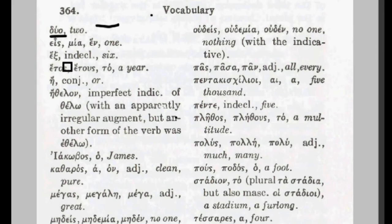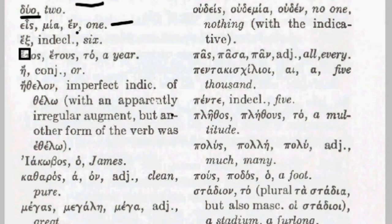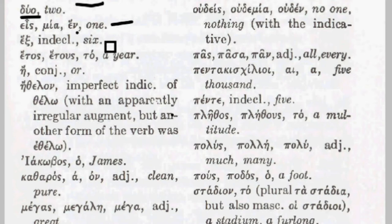Heis, mia, hen — the reason we have three different forms is because heis is masculine, mia is feminine, and hen is neuter. Not all numbers use that kind of declension, but in the case of the number one, and also the number three that we'll come to later, we find that. My Greek professor used to joke: if you slightly mispronounce the first of these it sounds like 'heis, mia, hen — steal a hen for me!' In any event, the correct pronunciation is heis, mia, hen, and all of those mean one.